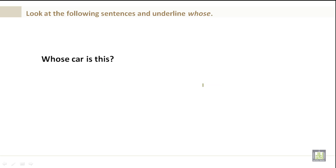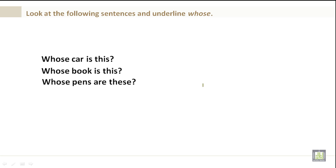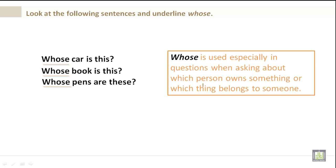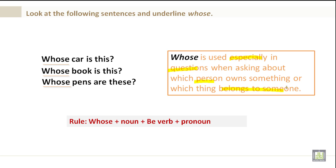Look at the following sentences and underline 'whose.' Whose car is this? Whose book is this? Whose pens are these? Whose is used especially in questions when asking about what a person owns or which thing belongs to something. The formula is: whose + noun + be verb (remember, the be verb can be different) + pronoun.